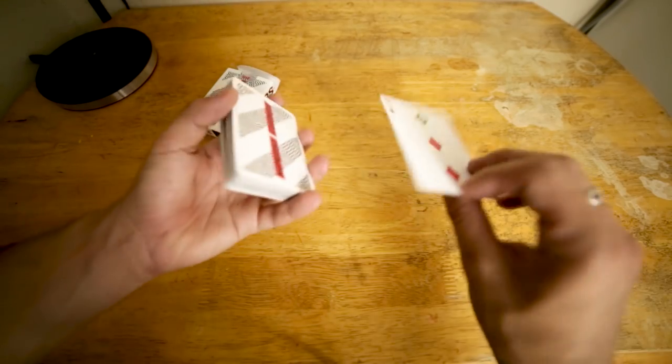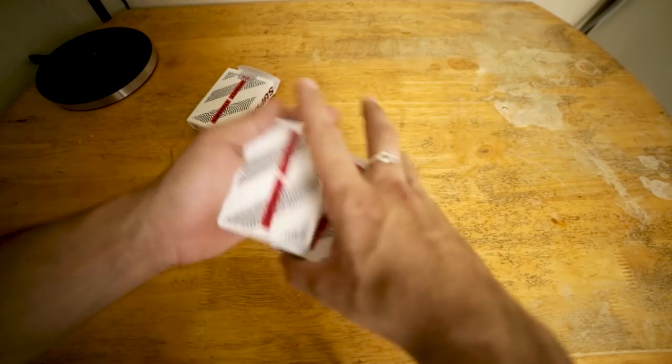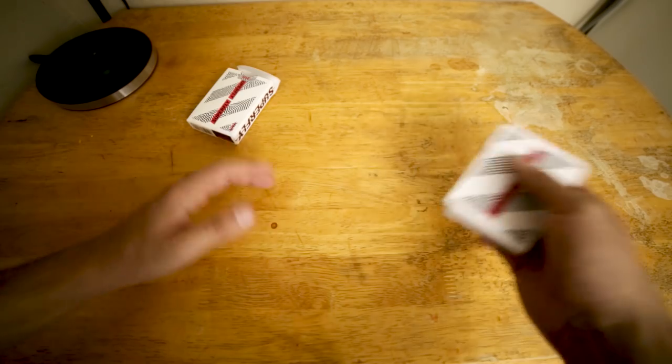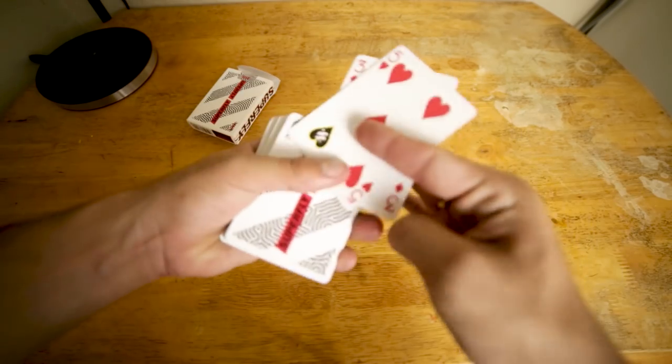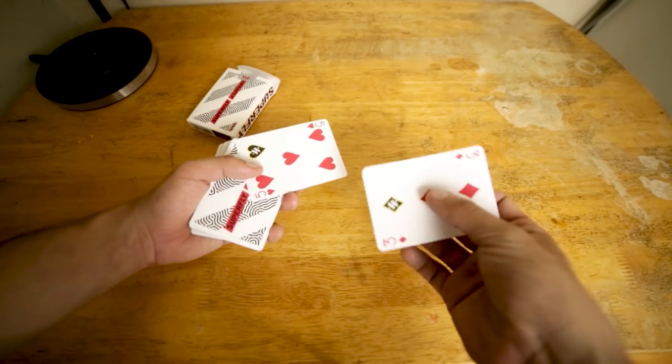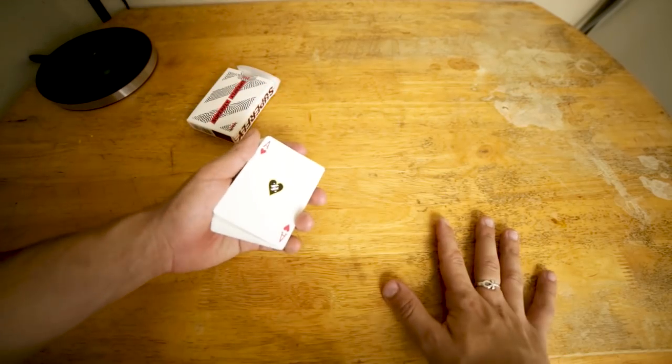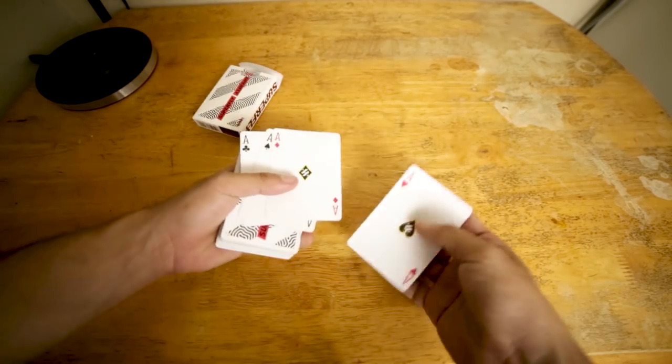So you control a card to the bottom and you control a card to the top via your favorite methods here. In this case, I'm just simply doing two Double Undercuts. You hold the cards in your right hand, toss them over to your left hand, and you could produce both cards just like that very simply. However, we're going to use this as a little bit of an Ace production, so we're going to use the four Aces in this particular case.